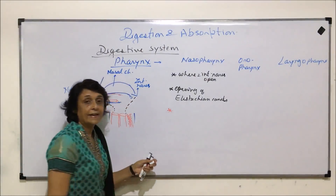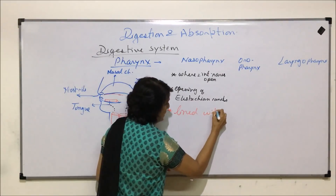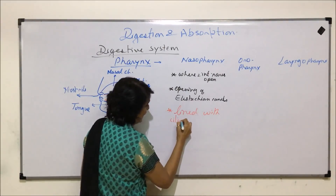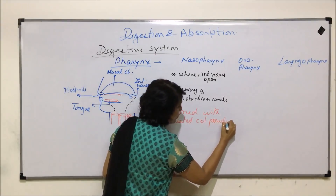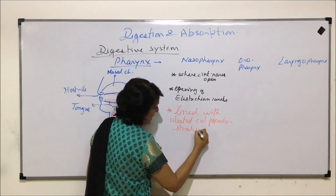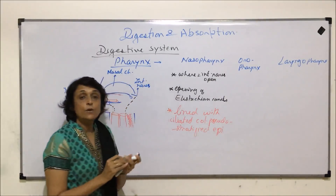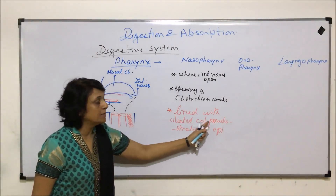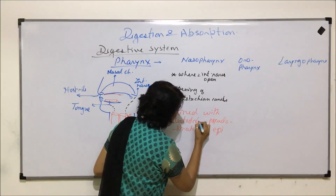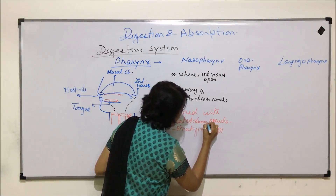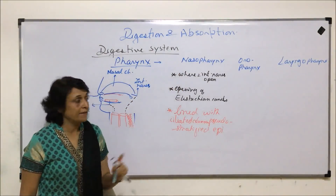The nasopharynx is lined with ciliated columnar pseudostratified epithelium.